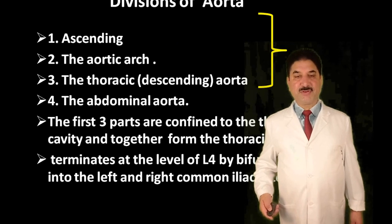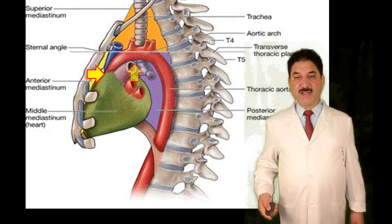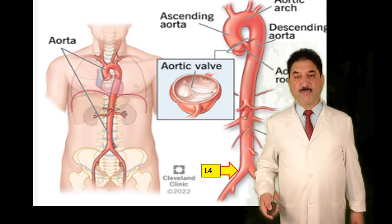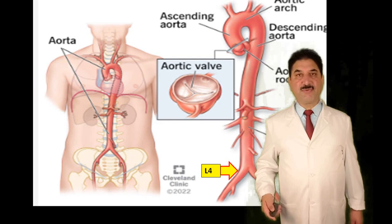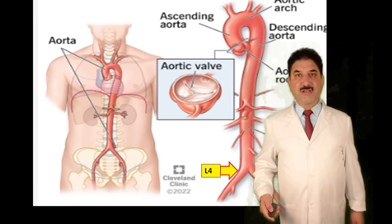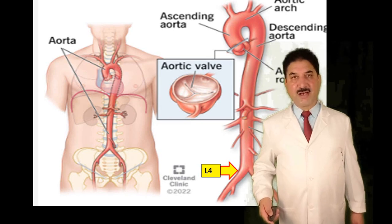As shown in this diagram, the aorta consists of ascending aorta, arch of aorta, descending thoracic aorta, and abdominal aorta. Abdominal aorta divides at the level of L4 into right and left common iliac arteries. Abdominal aorta gives unpaired branches for abdominal viscera in the form of celiac trunk, superior mesenteric artery, and inferior mesenteric artery. It gives paired branches for paired viscera like inferior phrenic, renal, and gonadal arteries.